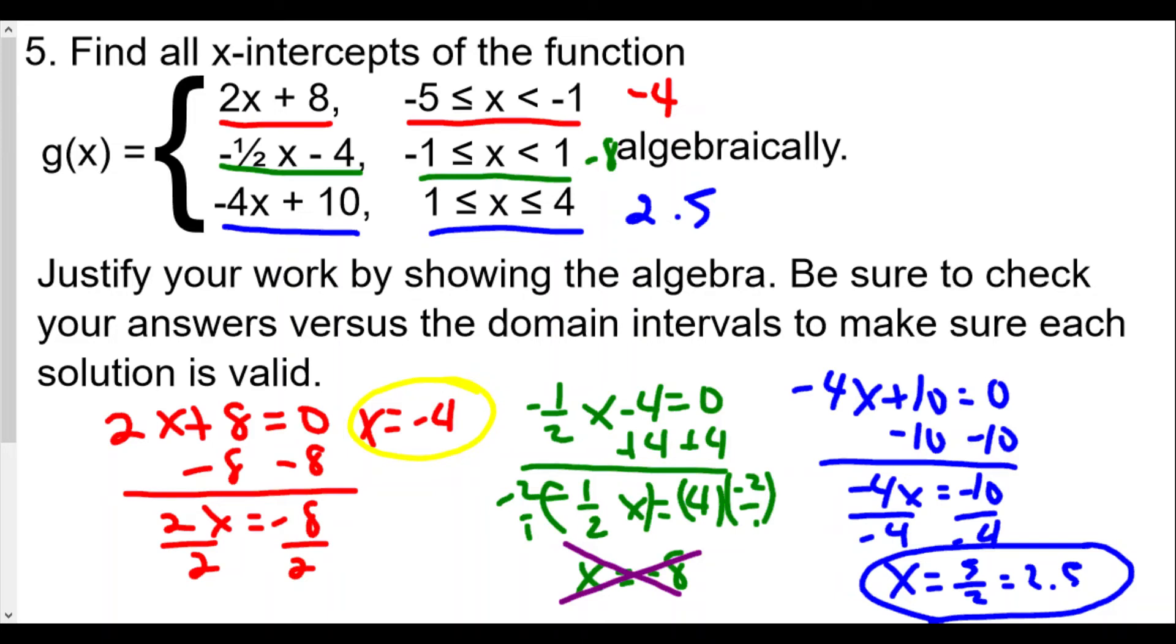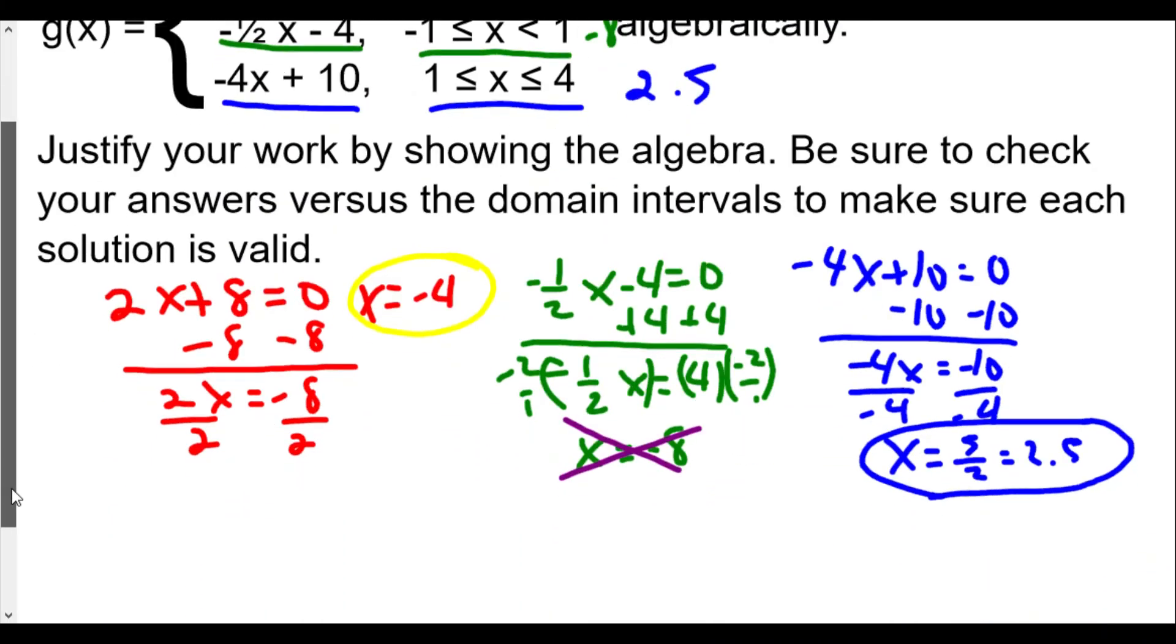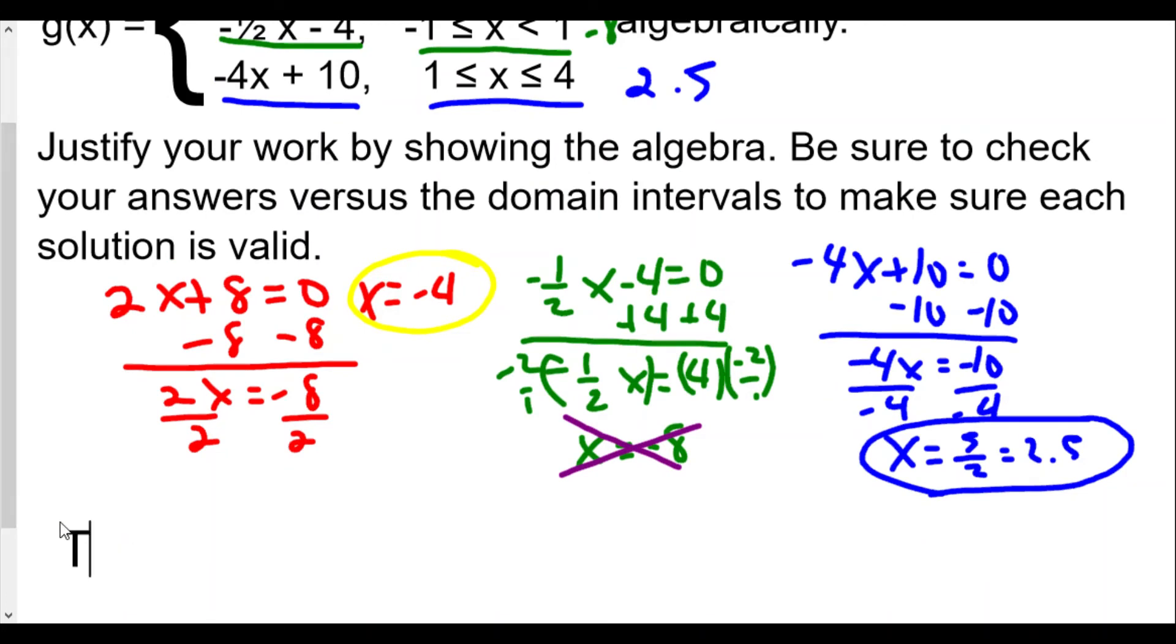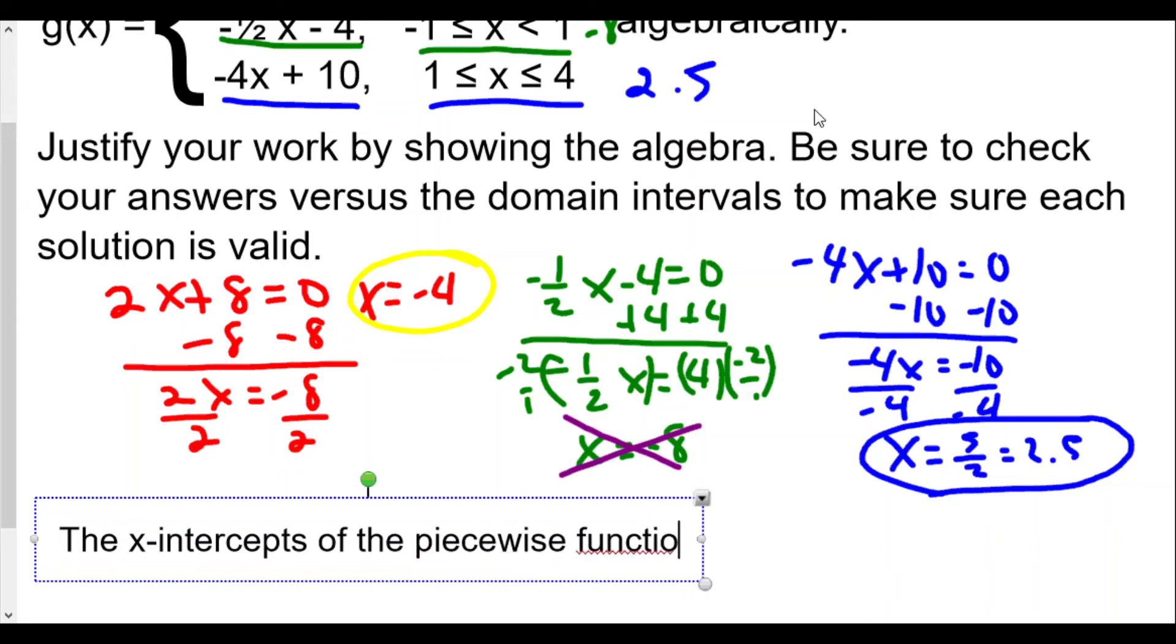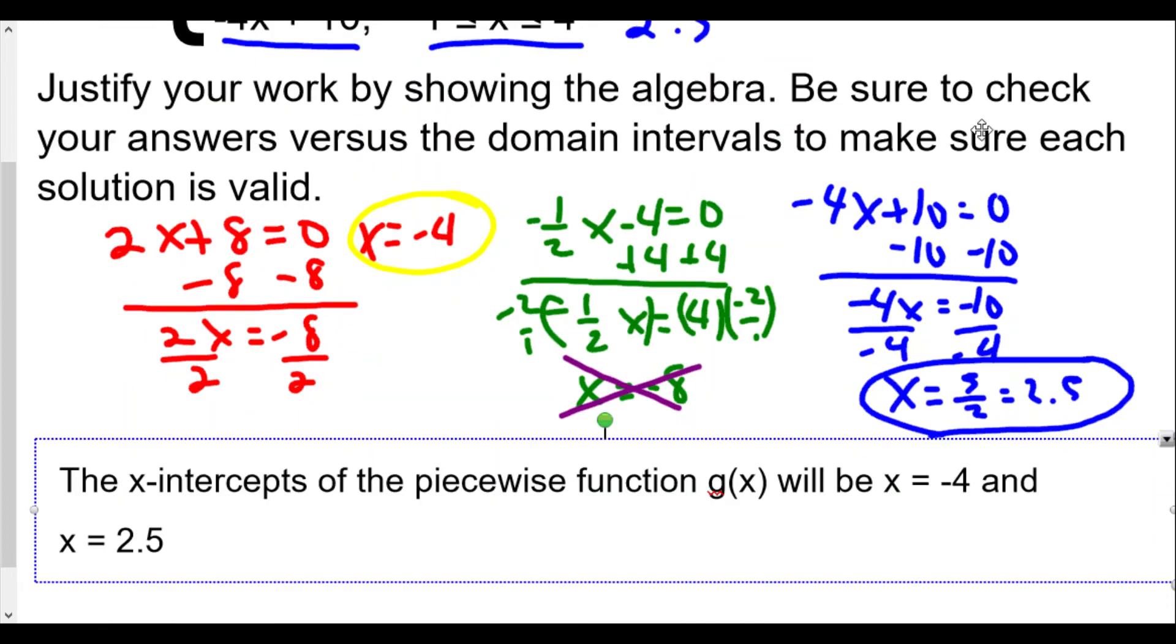I'm going to type this out - my handwriting is terrible. So let me use a smaller font. The x-intercepts of the piecewise function g(x) will be x equals -4 and x equals 2.5. And we rejected x equals -8 because it didn't work out.